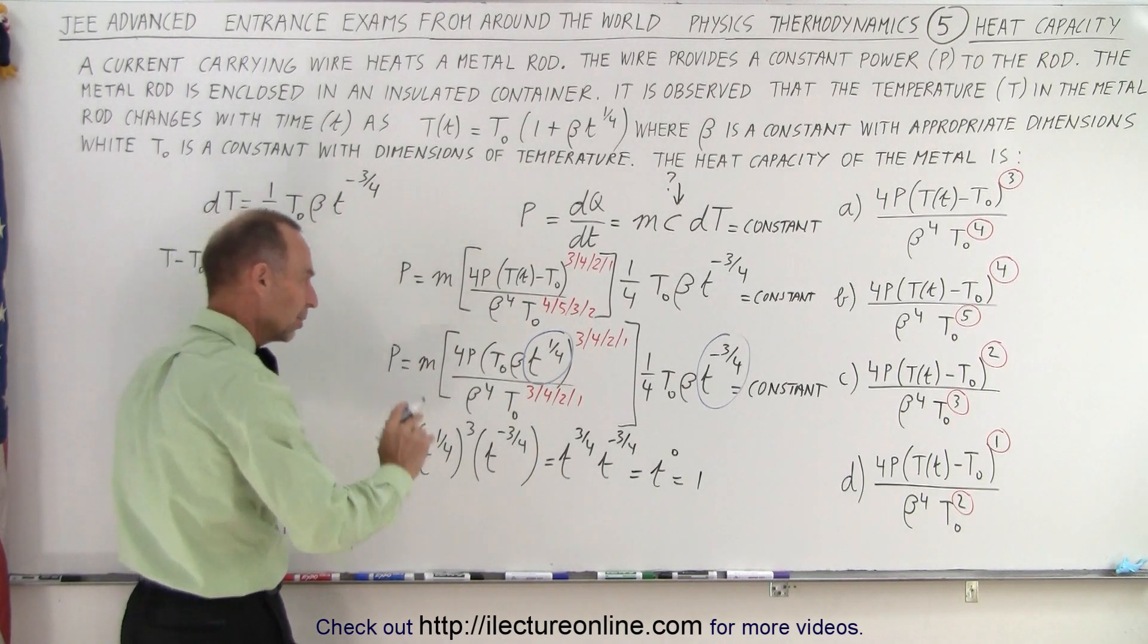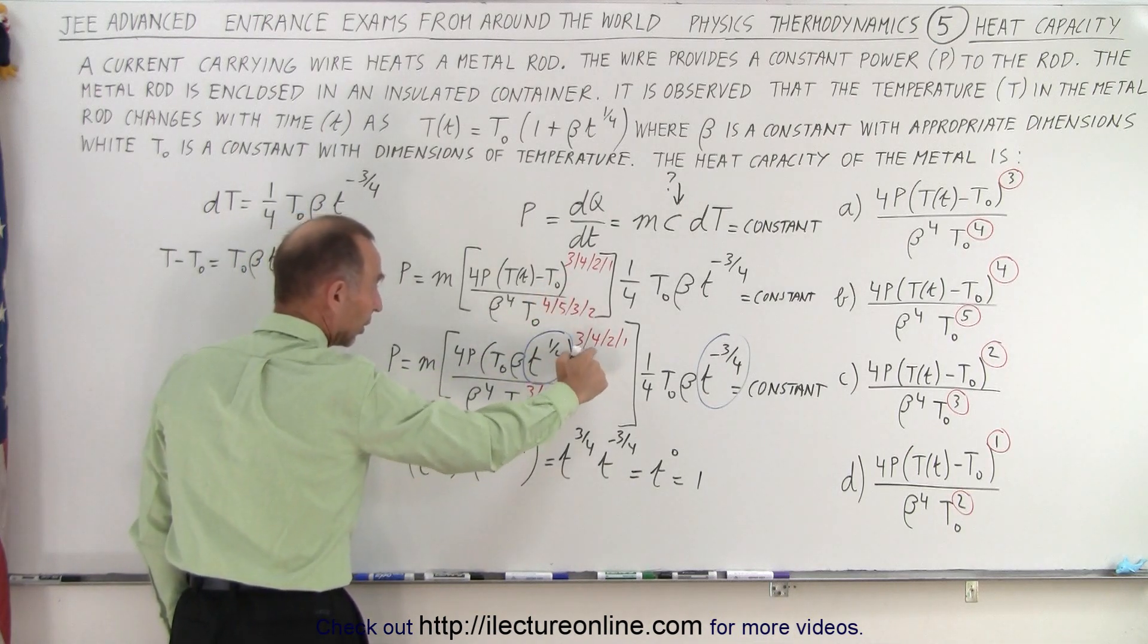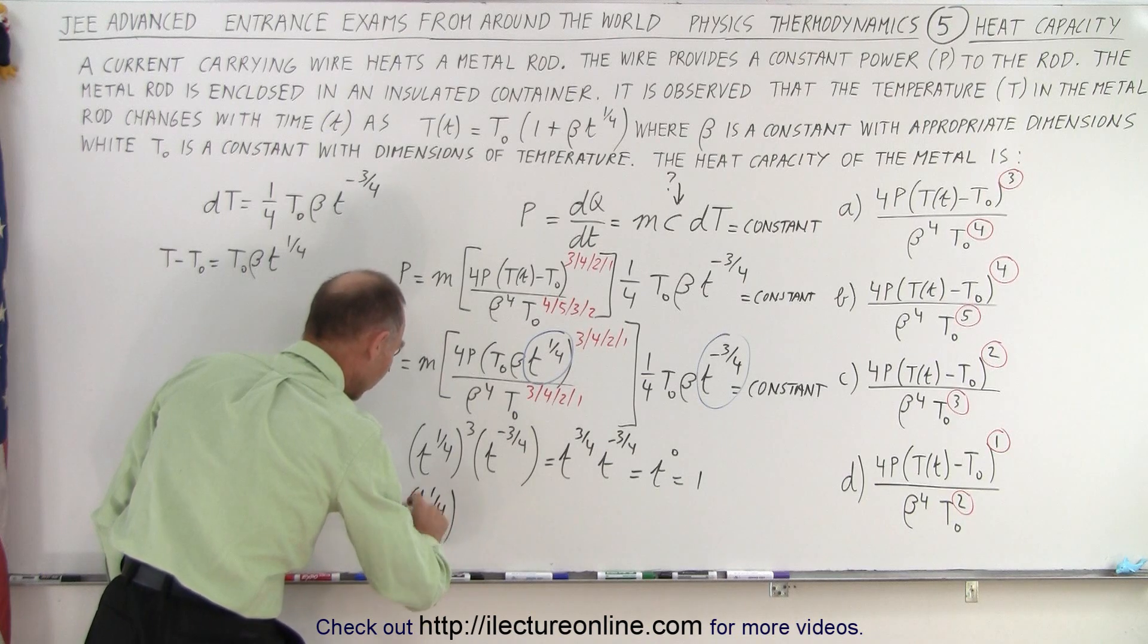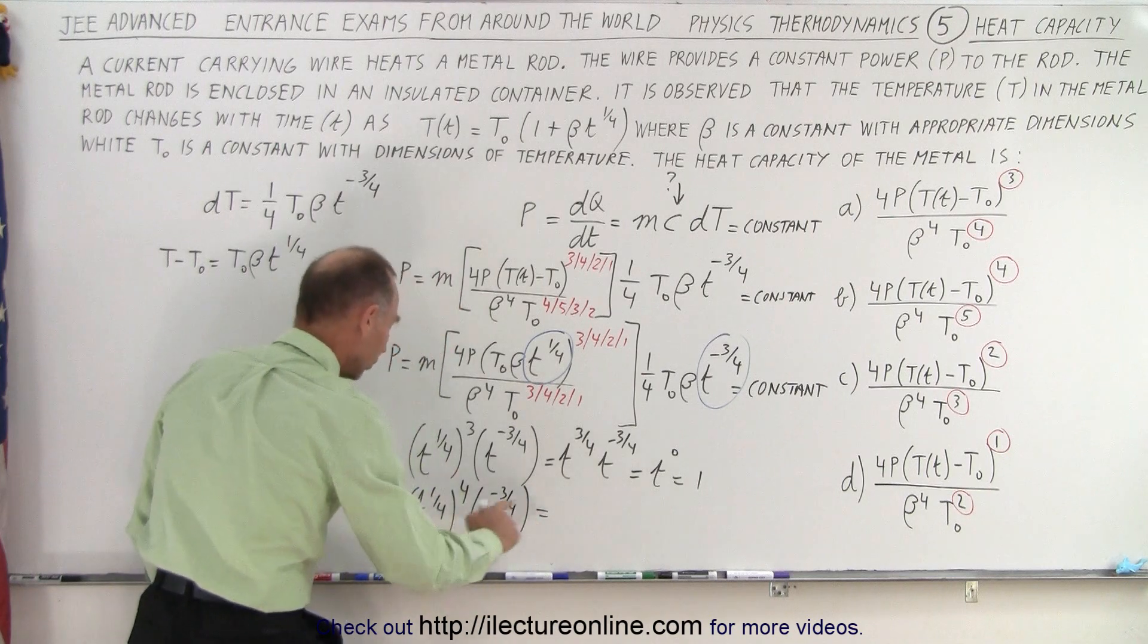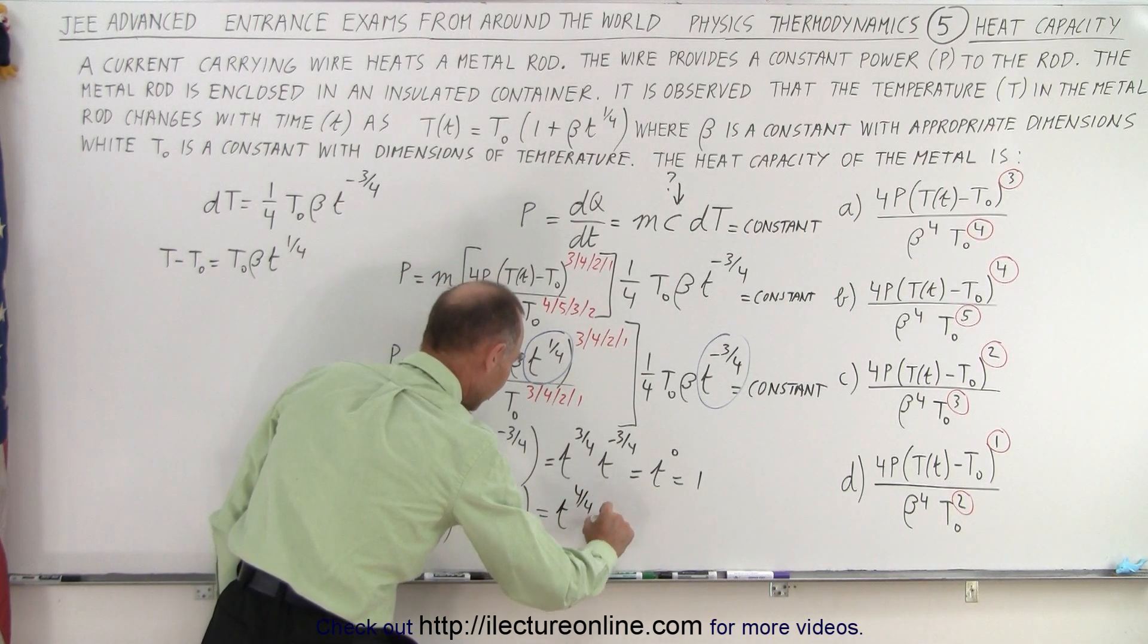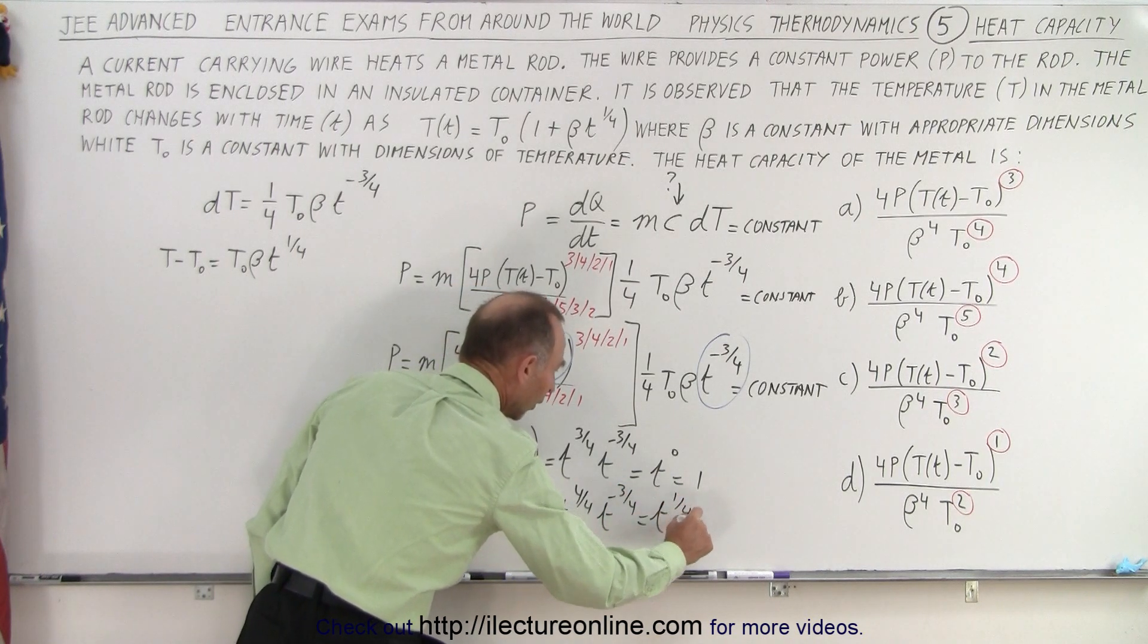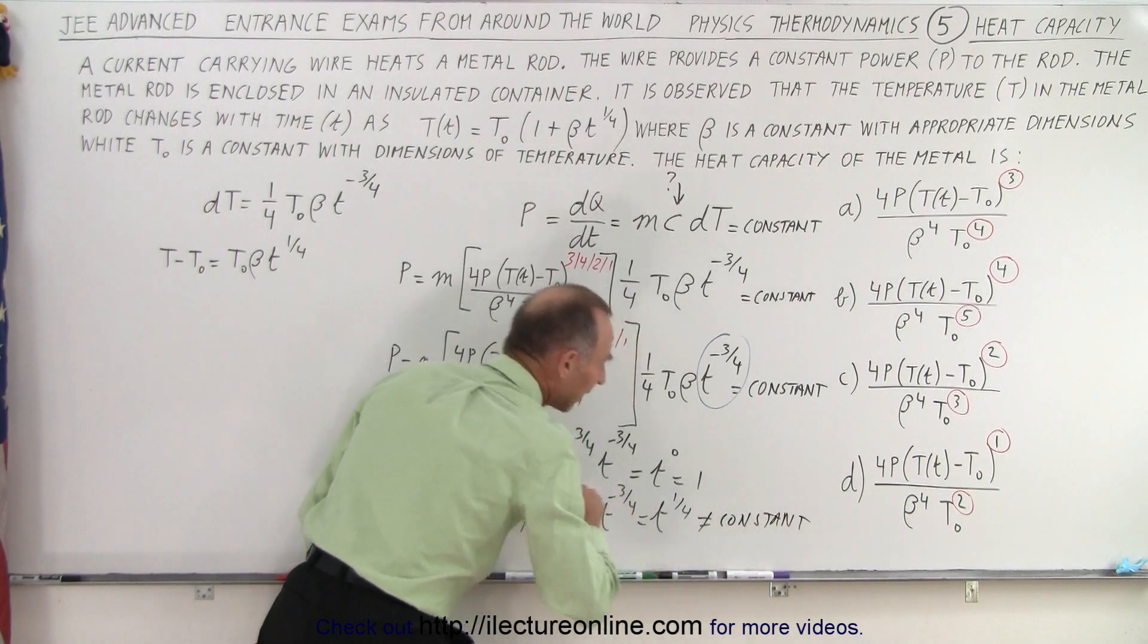That must be the answer, but let me show you what would not be an answer. Let's take the next exponent, the exponent 4. So I get t to the one quarter raised to the fourth power times t to the minus three quarters, and that would be equal to t to the four over four times t to the minus three over four, which is equal to t to the 1 over 4, which is not a constant because then it still would vary with time.